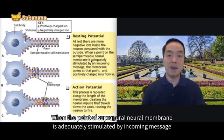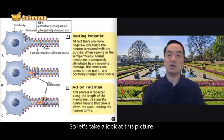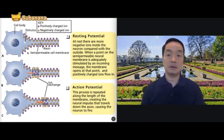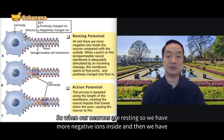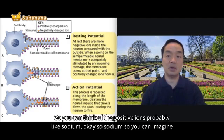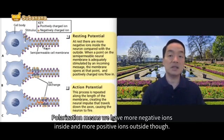When the point of the neural membrane is adequately stimulated by an incoming message, the membrane opens and positively charged ions flow in. So you see the cell body here, and this is an axon. When our neurons are resting, we have more negative ions inside and a lot of positively charged ions outside — you can think of the positive ions as sodium. So the sodium ions, the positively charged ions, are all outside the axon. That's why we call this condition polarization.